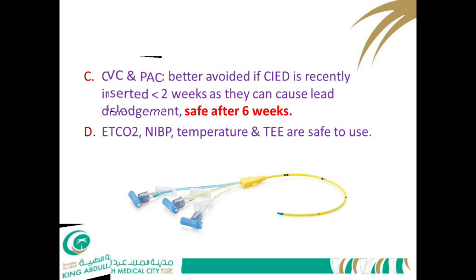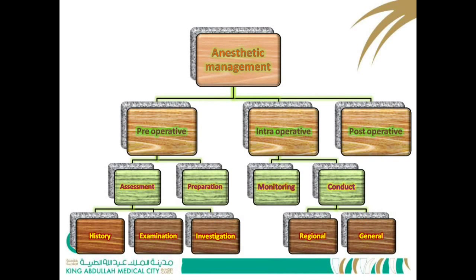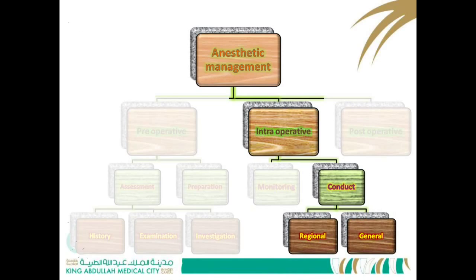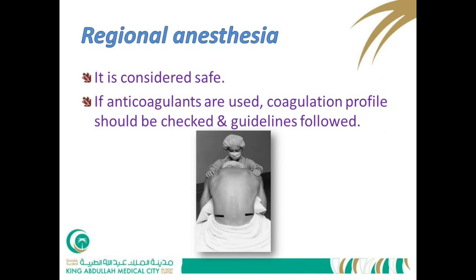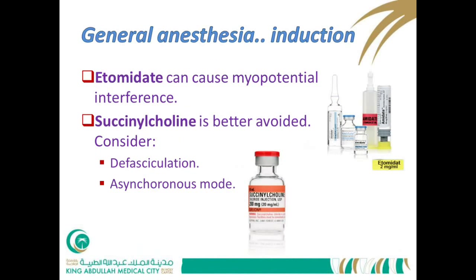Regional anesthesia is considered safe unless the patient is on anticoagulants, in which case standard regional anesthesia guidelines apply. For general anesthesia, induction agents are generally safe except etomidate, which can cause myopotential interference similar to electromagnetic interference. Succinylcholine should be avoided as fasciculations can also cause myopotential interference, unless defasciculation with a non-depolarizer agent is performed first.